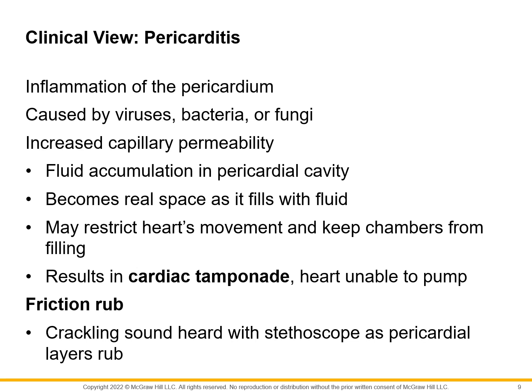Inflammation of the protective layers around the heart is called pericarditis — 'itis' meaning inflammation. Pericarditis can be caused by bacteria, fungi, or viruses. When there are abnormally high volumes of fluid in the pericardial cavity, it swells up and restricts the heart's movement because there is only a finite amount of space between the parietal and visceral layers. There are also friction rubs — chest pain accompanying a crackling sound — which can result in cardiac tamponade.